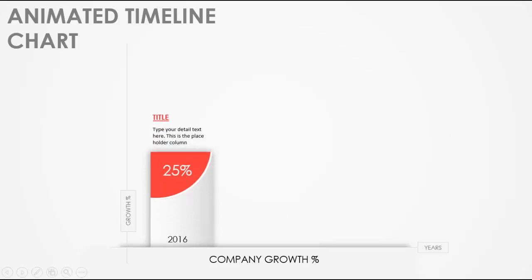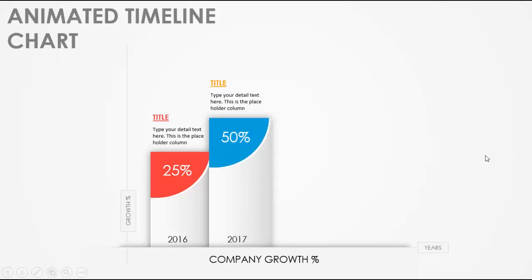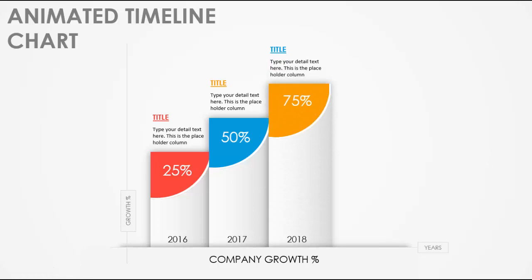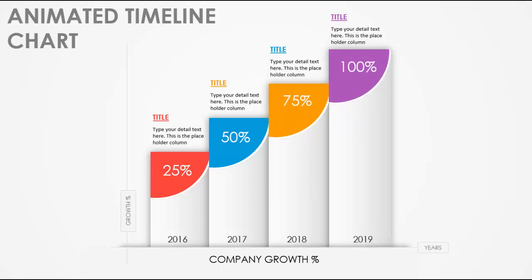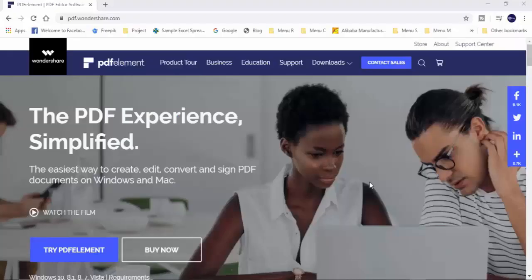On the first click it shows 2016 with 25% growth and the title appears. Next click shows 2017 with 50%, then 2018 with 75%, and 2019 with 100%. This is a great slide for people who want to present data in a much easier way. Let's start how to do this in PowerPoint.